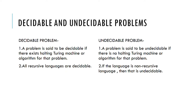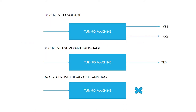As discussed in the previous videos, recursive languages are decidable, and if the language is non-recursive then it is undecidable. Now let's look at this figure showing the difference between recursive language, recursive enumerable language, and not recursive enumerable language. For recursive language, when an input is given to the Turing machine it will say yes or no — if it accepts the input string it outputs yes, otherwise it outputs no.